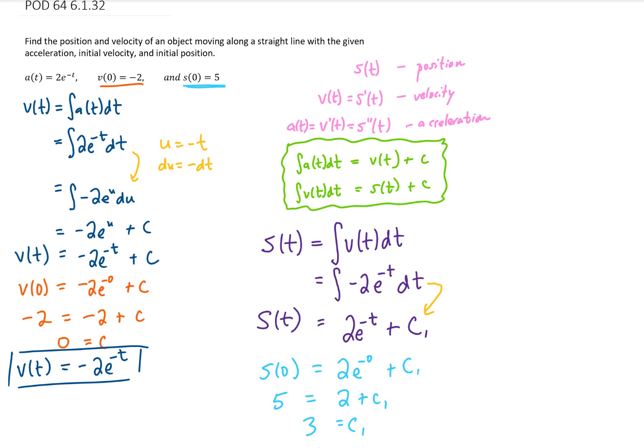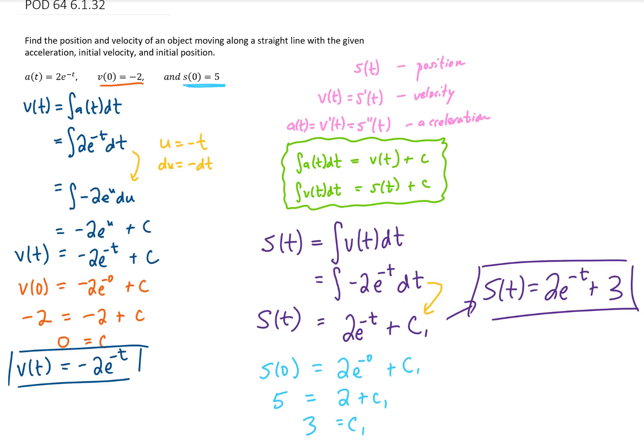Finally, plugging c1 into our position function gives us our final s(t), which is going to be 2e^(-t) + 3. And that is going to do it for that problem. Hopefully that helps you out with understanding the relationship between position, velocity, and acceleration of an object. And I'll see you next time for the calculus problem of the day.